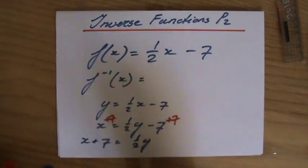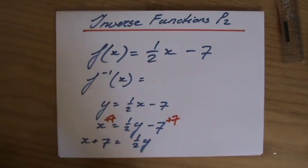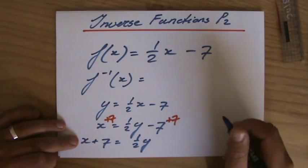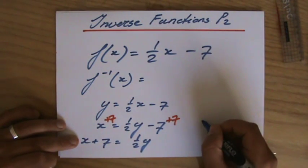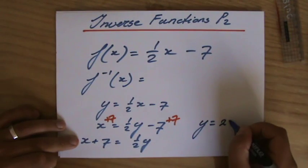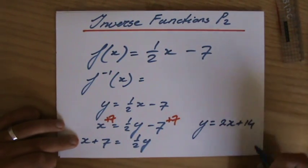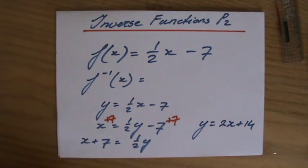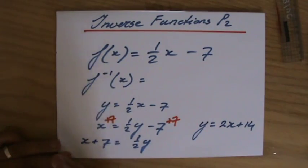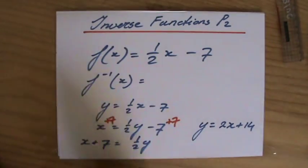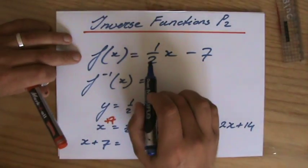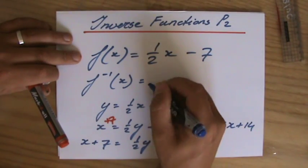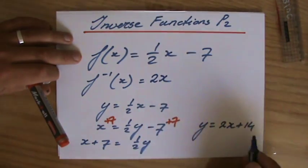Because a half times 2 then also is 1. So multiplying both sides by 2 gives me y equals, let me write it here, y equals 2x + 14. The whole left side times 2. So the inverse function of (1/2)x - 7 is 2x + 14.